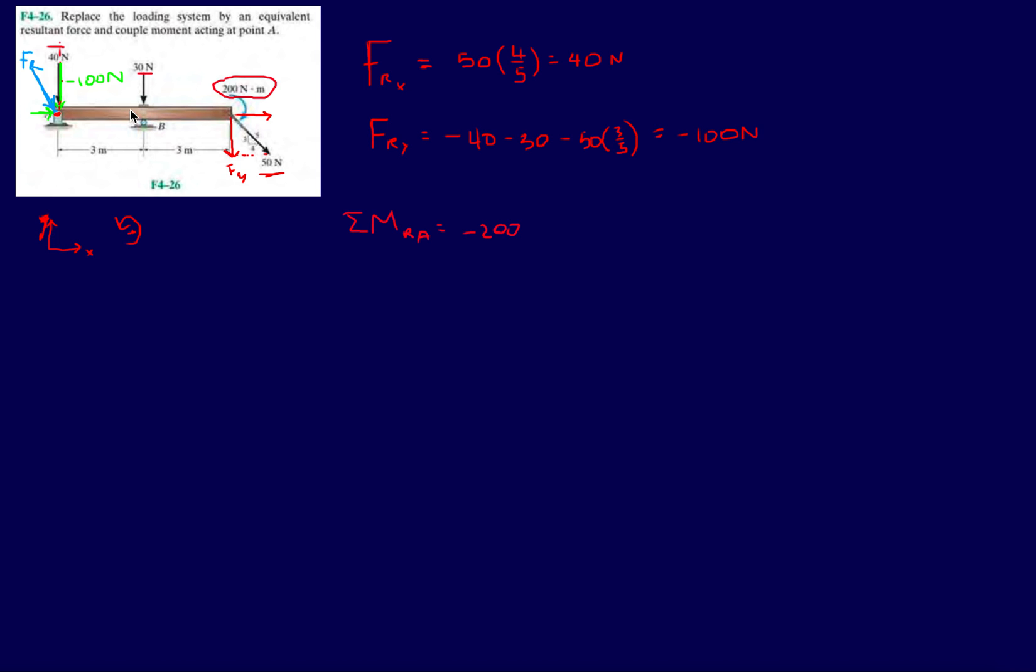The line of action if you think about it like that, the line of action intersects point A. So that contributes zero torque. Let's look at 30 Newtons. 30 Newtons, if I push down on this side it wants to make the structure rotate in this direction, in a clockwise direction, so that's going to be negative force times the perpendicular distance from the pivot point to the force. That's going to be 3 meters.